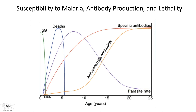Once the newborn reaches about eight months and the maternal antibodies have decreased in concentration in the newborn's serum as a result of the decay of IgG over time, the newborn becomes susceptible to not only infection but the mortality of that infection, because its own immune system hasn't quite matured enough. Most deaths from malaria in the less developed world occur between the ages of eight months and five years.